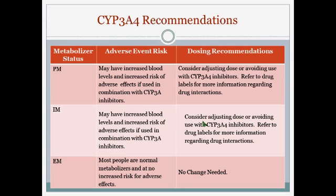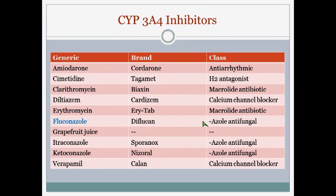Intermediate metabolizers may also have increased blood levels and increased risk of adverse effects, so the physician may want to consider adjusting the dose or avoiding use with CYP3A4 inhibitors. Extensive metabolizers have no increased risk for adverse effects, so no change is needed. A list of 3A4 inhibitors includes the commonly used fluconazole (Diflucan), as well as itraconazole (Sporanox) and ketoconazole (Nizoral), which are azole antifungals.